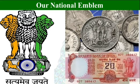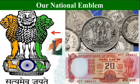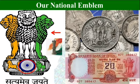National Emblem. Our national emblem is an adaptation of the Ashoka pillar at Sarnath. It has four lions standing back to back on a platform. Below the platform, the words Satyamev Jayate are carved, which means truth alone triumphs.